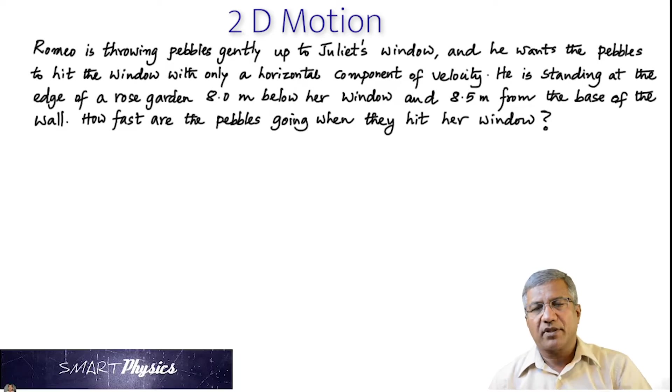How fast are the pebbles going when they hit her window? So the height is 8 meters. He is 8.5 meters away. Those are the only two quantities given. You have to find how fast the pebbles are going when they hit the window. This is really a tough one for a student.